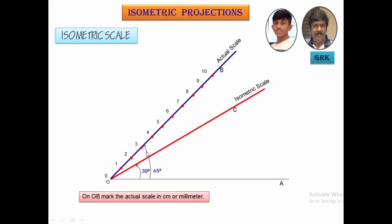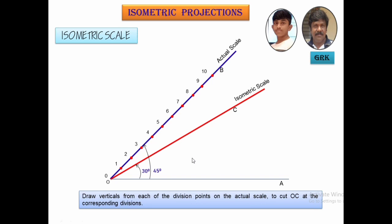From here, you drop the verticals to cut the isometric scale. You can see the vertical drops. You're going to mark these distances as 1 dash, 2 dash, 3 dash, up to 10 dash. Normally these distances, when measured or calculated analytically, will be 0.816 times the actual length. And this is the easiest way of getting the isometric distances, which is very important to draw the isometric projection.